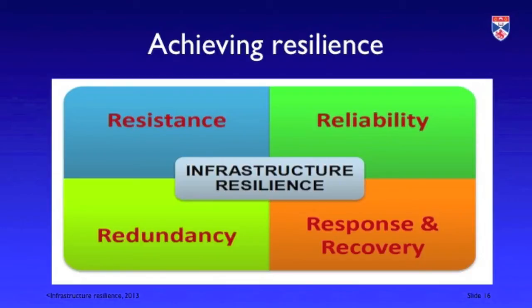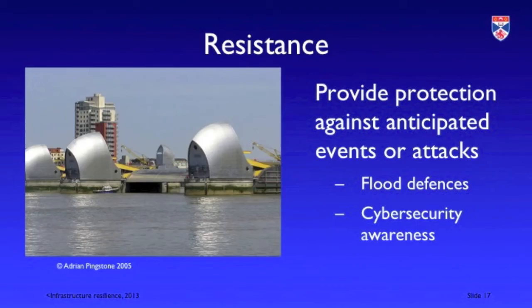To achieve resilience, we sometimes talk about the four R's model. The four R's are resistance, reliability, redundancy, and recovery. Resistance is about providing protection for anticipated events. A good example in physical infrastructure is to provide flood defenses — so if an electricity switching station is located in a flood-prone area, we ensure it is isolated by waterproof walls. In terms of software, we use things like firewalls to deter cyber attacks.